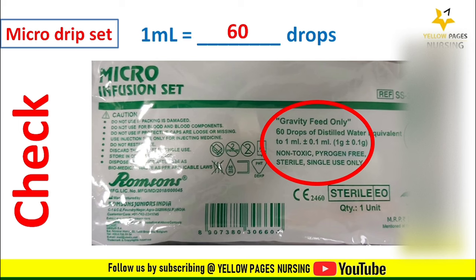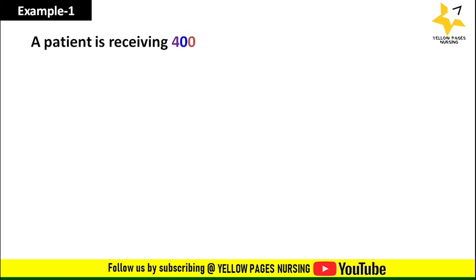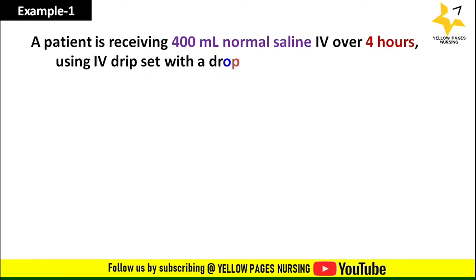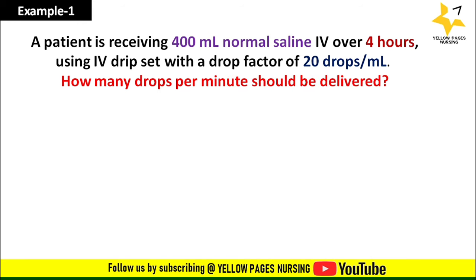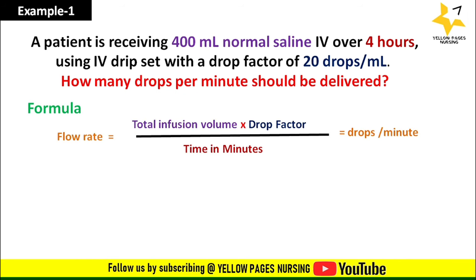Let's start with the calculation. Example one: a patient is receiving 400 ml normal saline IV over four hours using a drip set with a drip factor of 20 drops per ml. How many drops per minute should be delivered? The formula to calculate drops per minute is: flow rate = (total infusion volume × drop factor) ÷ time in minutes.